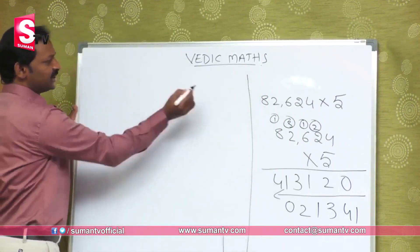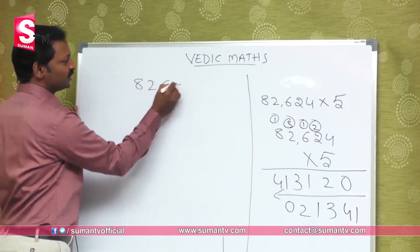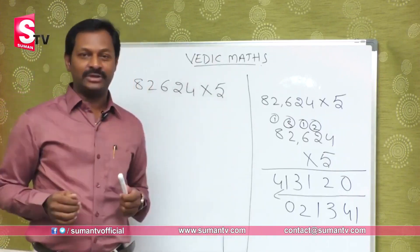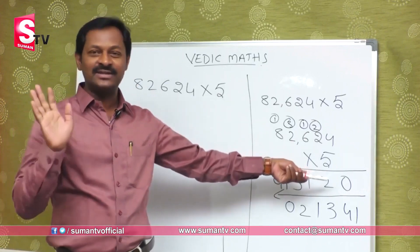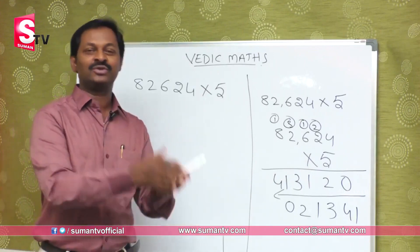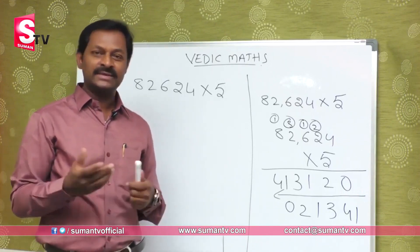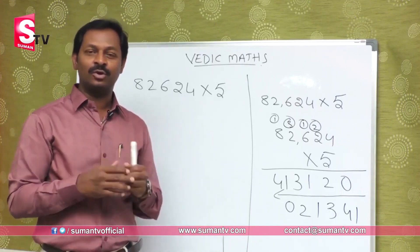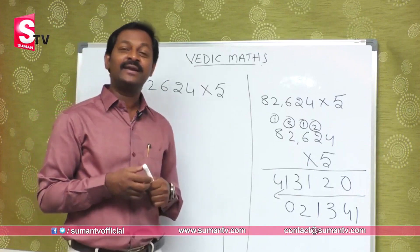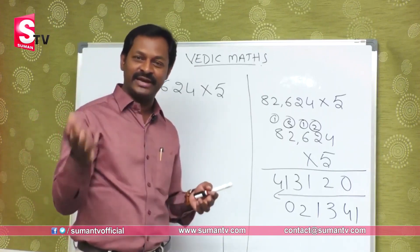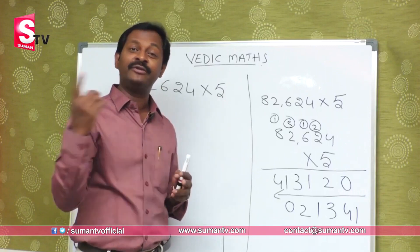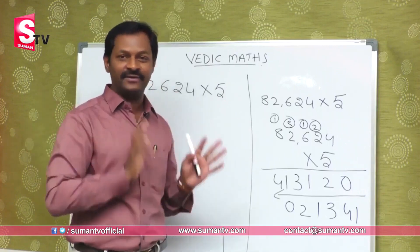We'll take Vedic Maths' program. So, the number given is 8, 2, 6, 2, 4 multiplied by 5. Now we'll take all the numbers. We'll take 5 as a number. How do we convert it? That's what we need — in addition, subtraction, multiplication, and division. Let's look at addition first. In addition: 1 plus 4, 2 plus 3, 3 plus 2, 4 plus 1 — all equal 5.